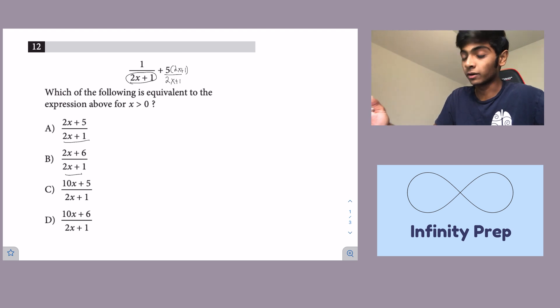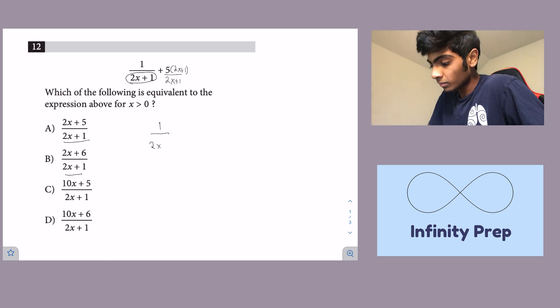So all we have to do is multiply out 2x plus 1 on top and the bottom and we get 1 over 2x plus 1 plus, and then first we'll multiply out the 5, 10x, and then to the 1 we get plus 5 over 2x plus 1.